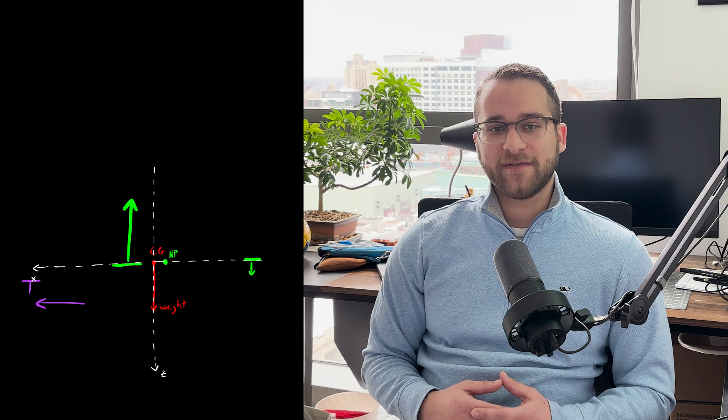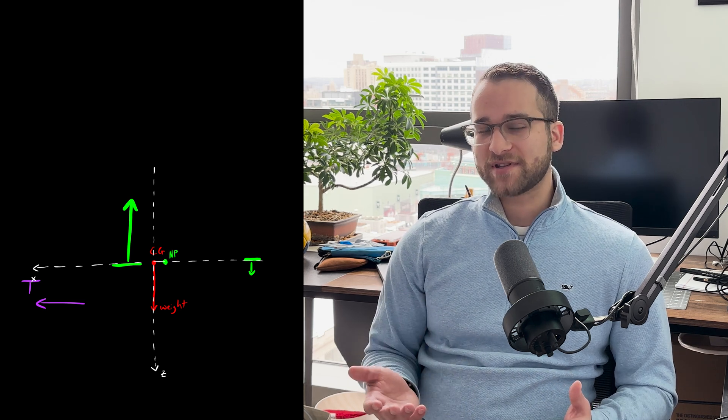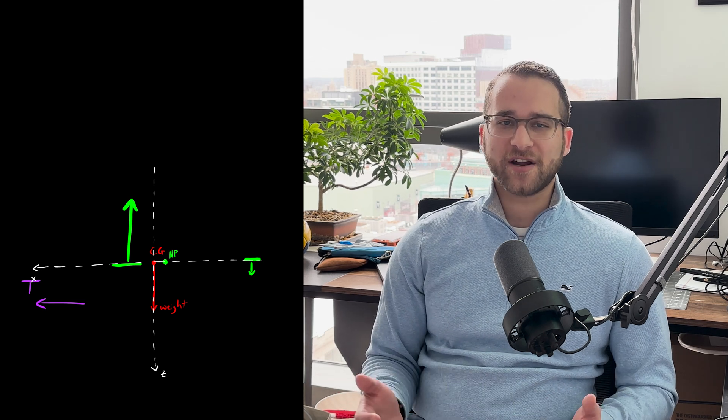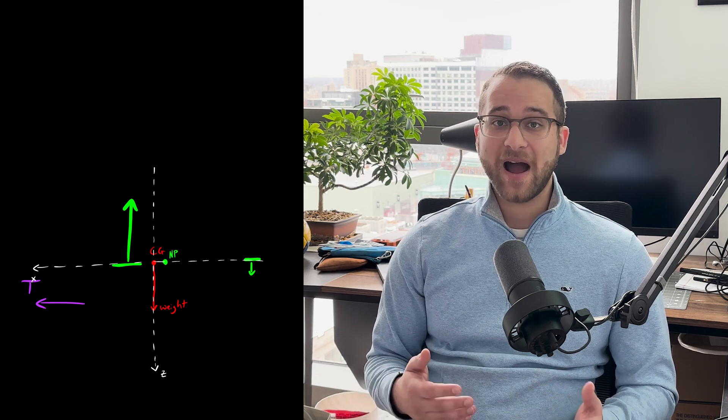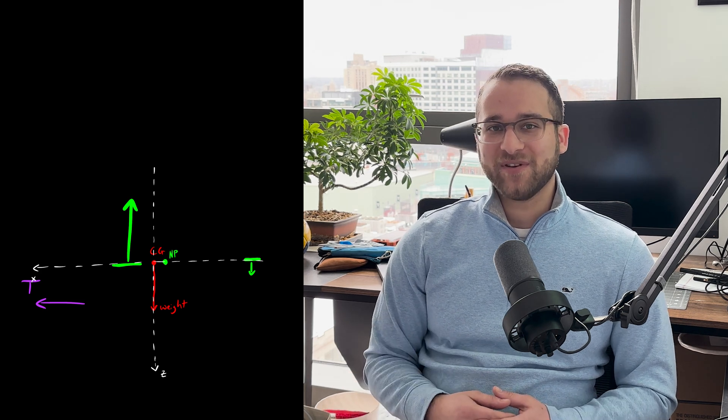Another factor that affects pitch stability is the propulsion system. If the thrust line is below the center of gravity, then increasing the power will pitch the plane up. This is why pilots generally employ trim tabs when they're changing power settings. If you're curious what trim tabs are, that's also covered in my previous video.